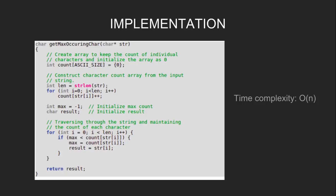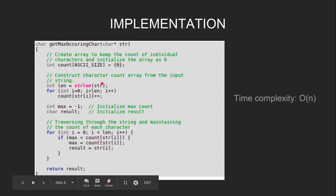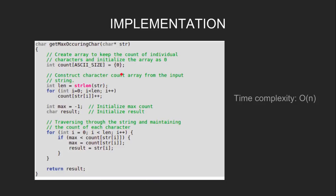Let's have a look at the implementation. First, we create a count array to keep the count of the individual characters and initialize this array to 0. The size of the array is currently 256, but it can be limited to 26. Then we traverse through the input string and do count[string[i]]++, that is, increase the count of the i-th character of the string by 1.